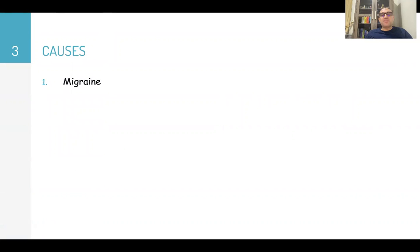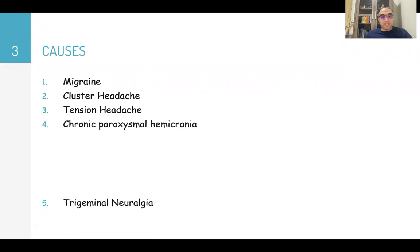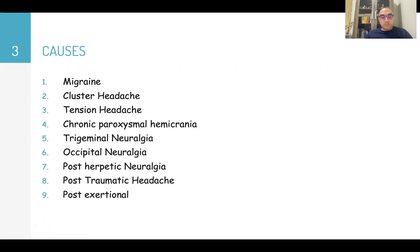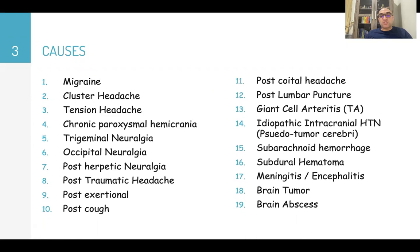Causes of headache are many. For primary headache, examples include migraine, cluster headache, tension headache, chronic paroxysmal hemicrania, trigeminal neuralgia, occipital neuralgia, post-herpetic neuralgia, post-traumatic headache, post-exertional headache, post-coital headache, post-lumbar puncture, giant cell arteritis, idiopathic intracranial hypertension (pseudotumor cerebri), subarachnoid hemorrhage, subdural hematoma, meningitis, encephalitis, and brain tumors.